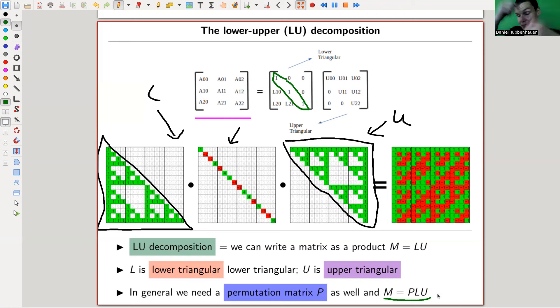You can always write a matrix as a lower triangular matrix and upper triangular matrix, and you might need to do a permutation. The way this comes about is you want to solve a linear system of equations, and you do Gaussian elimination on it. You record what you get in the upper triangular and record what you do in the lower triangular matrix.